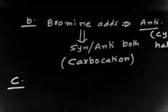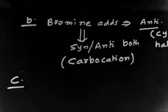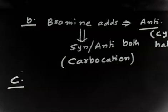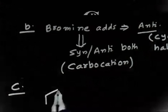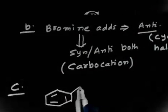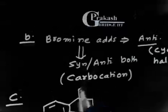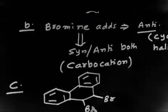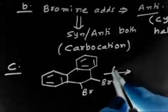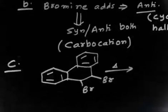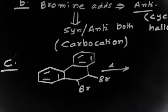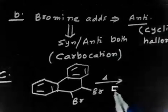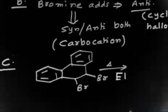Part C says: when the product is heated, HBr is evolved and 9-bromophenanthrene results — propose a mechanism for this dehydrohalogenation. So if you take the product from the previous reaction — which has one bromine here and another bromine here — and you heat it, dehydrohalogenation takes place.